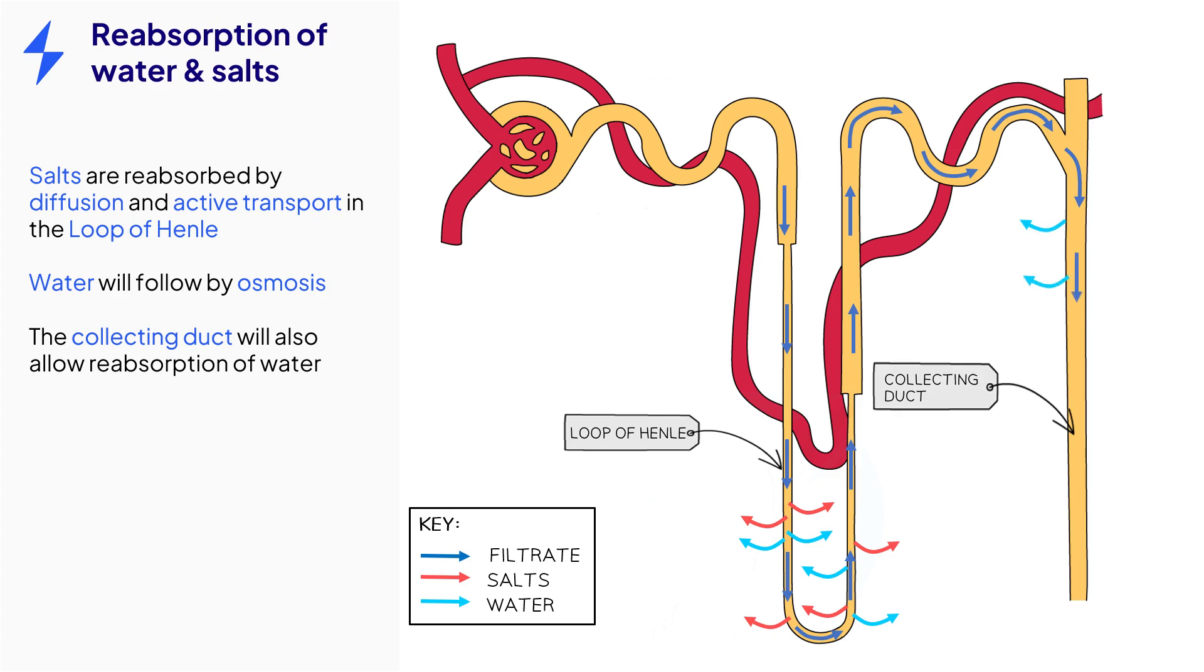The collecting duct will also allow water to move back into the blood, depending on the needs of the body. The fluid leaving the collecting duct is now called urine, since it will only contain waste products and excess substances which must be excreted.